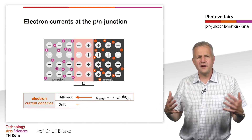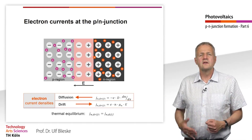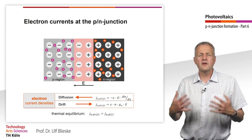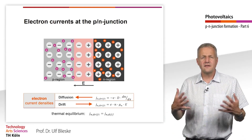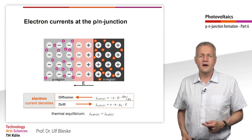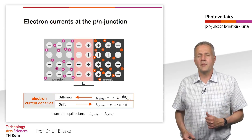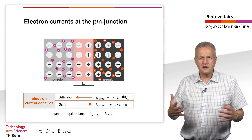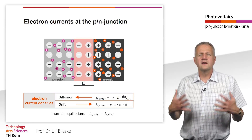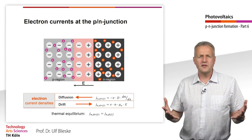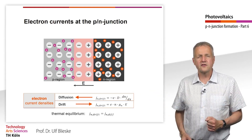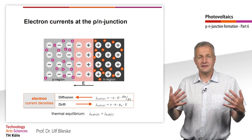We now consider the currents of the electrons at the P-N junction. The diffusion current density of the electrons is determined by the electron concentration gradient, so it flows in the opposite direction to the gradient, hence the negative sign. The proportionality is the diffusion constant, and since we are dealing with charged particles, it must be multiplied with the elementary charge. The field current density of the electrons is proportional to the electron concentration and the electrical field. Both values must also be multiplied by the mobility and elementary charge. In thermal equilibrium, which we consider first, field current and diffusion current are exactly equal.